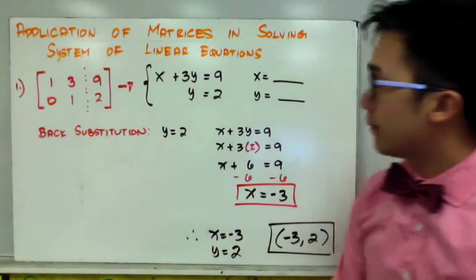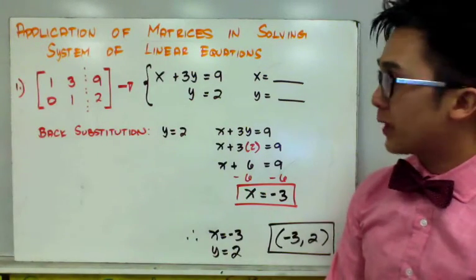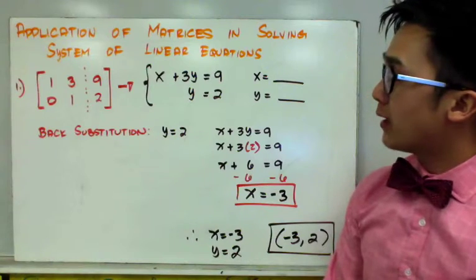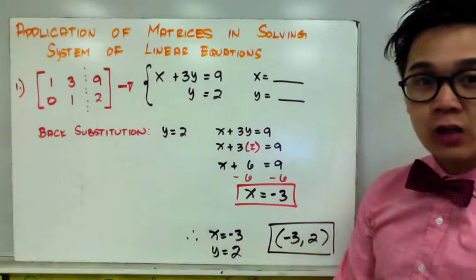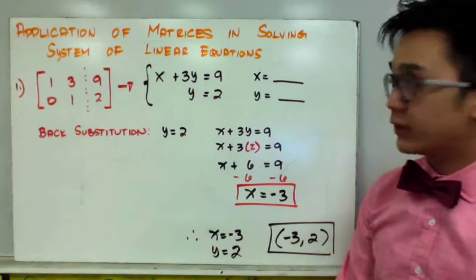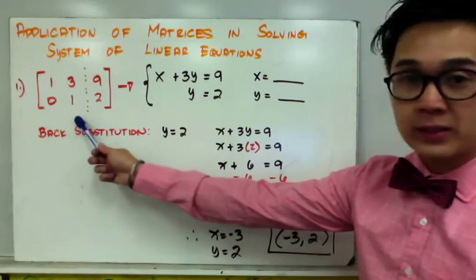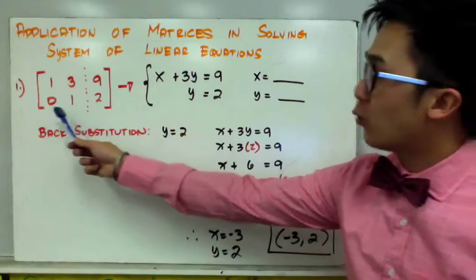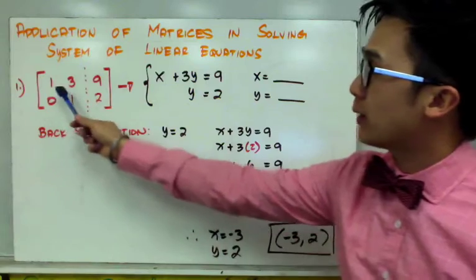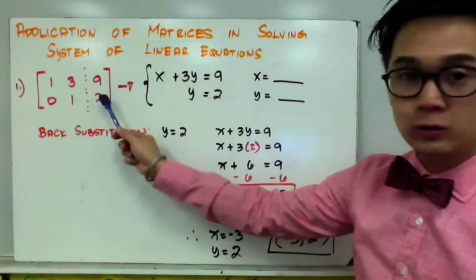Since a linear system can be converted into a matrix, we can now use matrices in solving for the solutions of our linear system. For example, in number one, we have an augmented matrix wherein the coefficient matrix is 1, 3, 0, 1, and the right-hand side is 9 and 2.